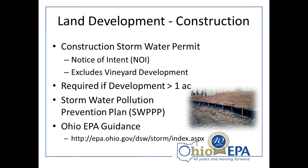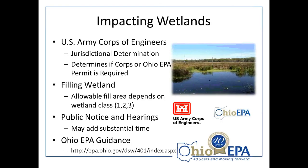The stormwater pollution prevention plan is typically developed in conjunction with an engineering company preparing plans for your site. Ohio EPA guidance can be found at epa.ohio.gov/dsw/storm/index.aspx. There is also a general handout available at Ohio EPA's website for small construction projects requiring stormwater permits, offered by Ohio EPA's Office of Compliance Assistance, dated August 2007, available from any of the district offices.